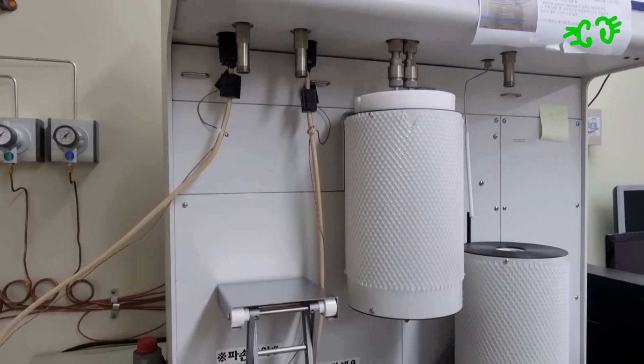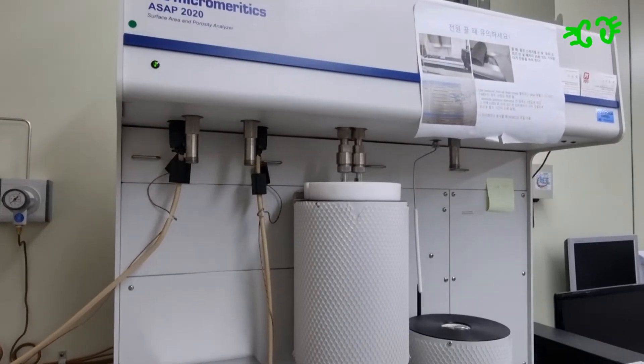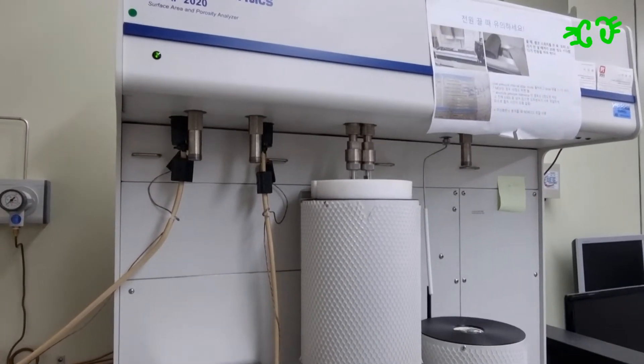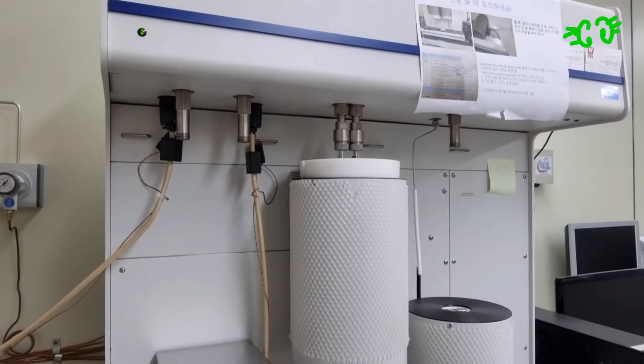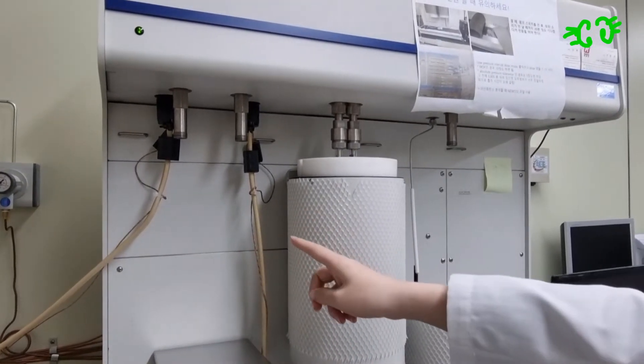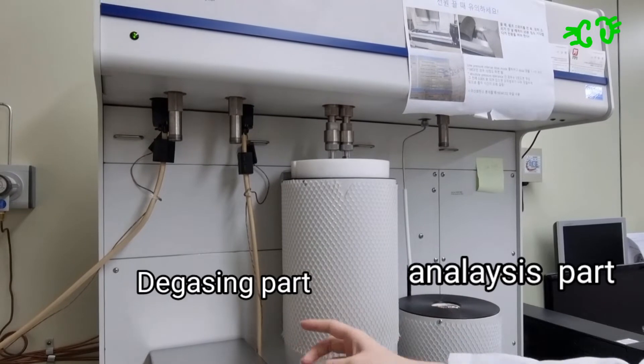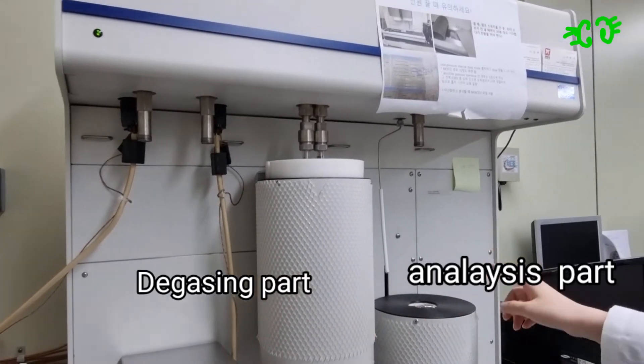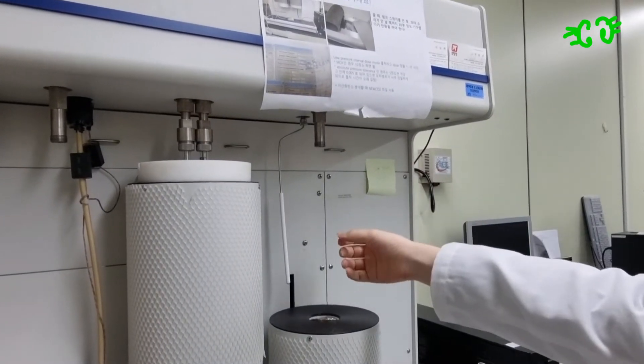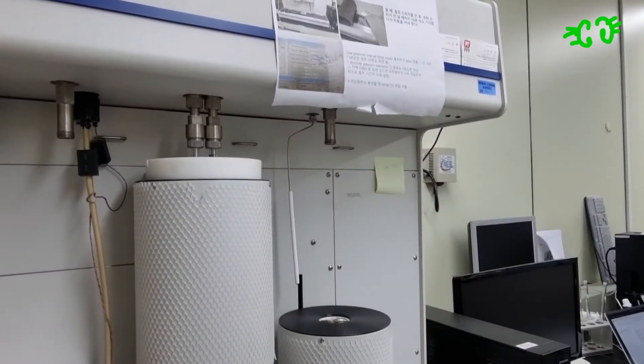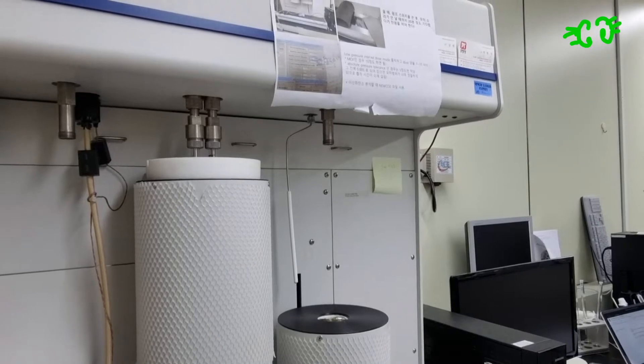There are two parts in ACP 2020, and here is the first part. We call it the degassing port, and we have two ports, so we can degas two samples at the same time. Here is the analysis port, so we can put a sample tube in here to analyze what we want.